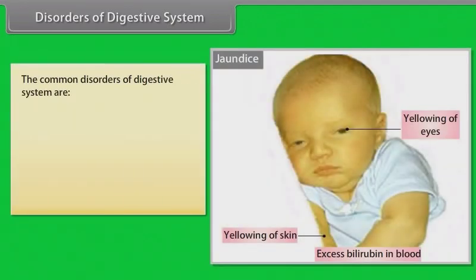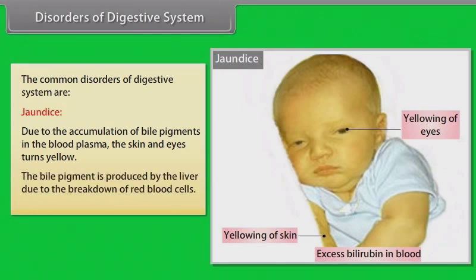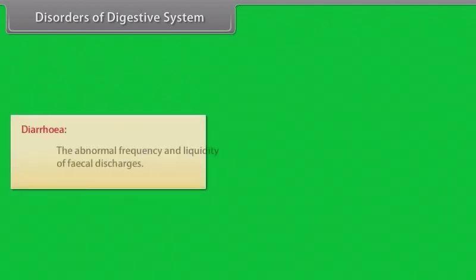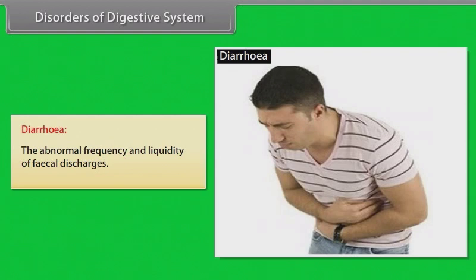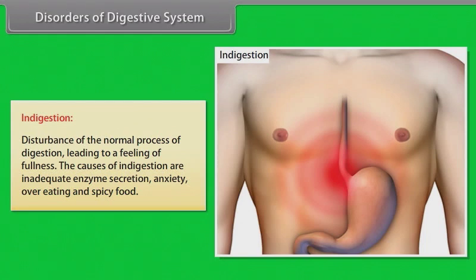The common disorders of the digestive system are: jaundice, caused by accumulation of bile pigments in the blood plasma, turning the skin and eyes yellow — the bile pigment is produced by the liver due to breakdown of red blood cells; vomiting, the ejection of stomach contents through the mouth; diarrhea, abnormal frequency and liquidity of faecal discharges; constipation, difficult evacuation of faecal matter; and indigestion, a disturbance of normal digestion leading to a feeling of fullness, caused by inadequate enzyme secretion, anxiety, overeating, or spicy food.